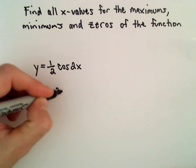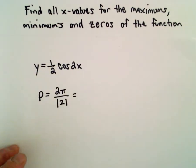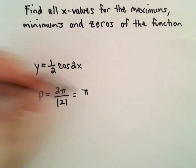The period will be 2π divided by the absolute value of 2, which is just 2. So the period will simply be equal to π.